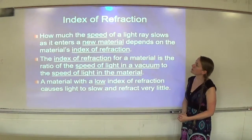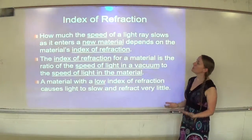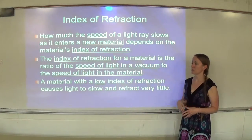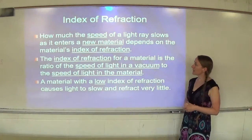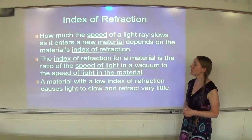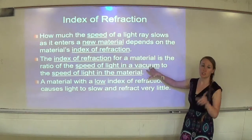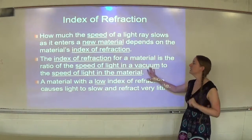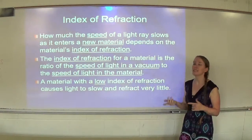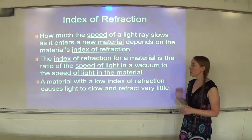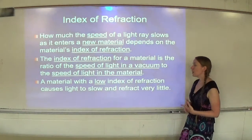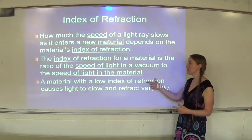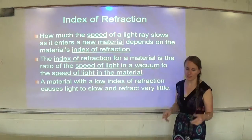How much the speed of light slows as it enters a new material depends on the material's index of refraction. The index of refraction for a material is the ratio of the speed of light in a vacuum — which is 3.0 times 10 to the 8 meters per second — to the speed of light in the material. A material with a low index of refraction causes light to slow and refract very little. The higher the index of refraction, the more bending the light experiences.